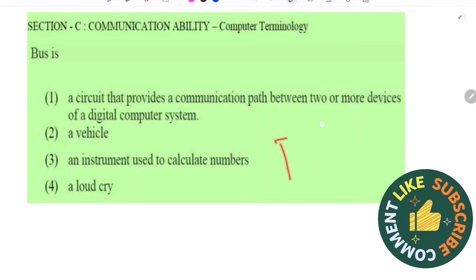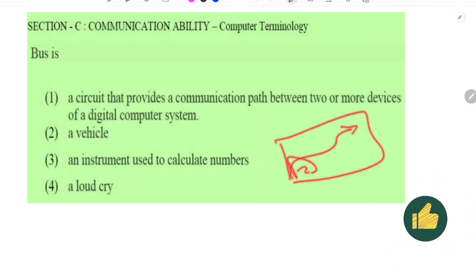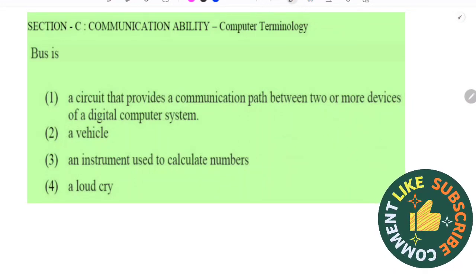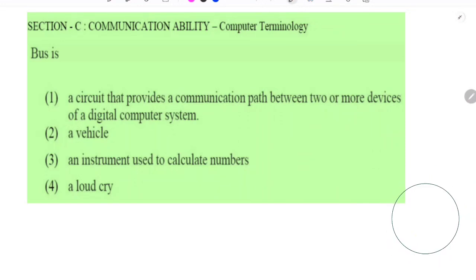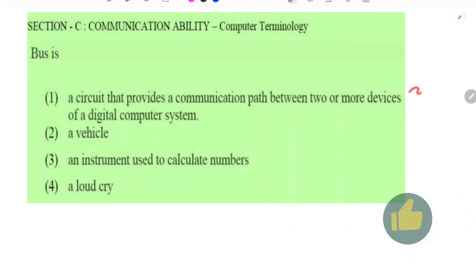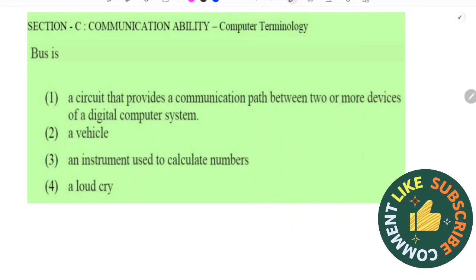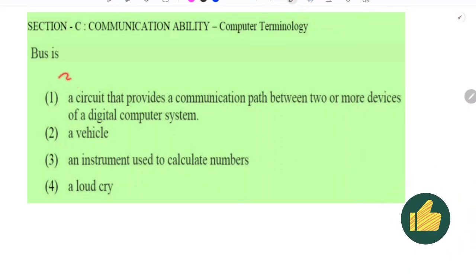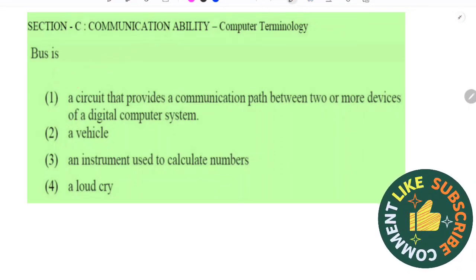How does communication or data transfer or signal transfer take place from one device to another device inside your computer, between the hardware devices? A bus is a circuit that provides communication between two or more devices of a digital computer system. Between two hardware parts, the data flows through a connection that is known as a bus.